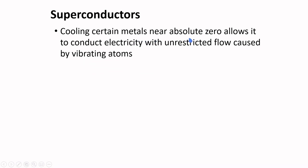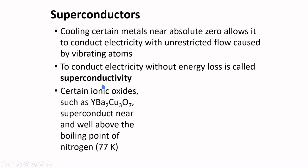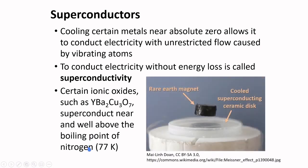Cooling certain metals near absolute zero allows them to conduct electricity with unrestricted flow, as vibrating atoms no longer scatter electrons. To conduct electricity without energy loss is called superconductivity. Certain ionic oxides superconduct near and well above the boiling point of nitrogen. In this picture, persistent electric current flows on the surface of the superconductor, effectively forming an electromagnet that repels a rare earth magnet.